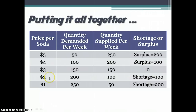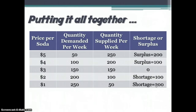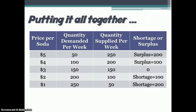If the price drops to $2, there's now a shortage — people want 200 cans but suppliers only produce 100, so we'd have a shortage of 100 cans. Equilibrium is that point at which the quantity demanded is equal to the quantity supplied — both demanders and producers have found a point where there is neither a surplus nor a shortage. In this example, the equilibrium price is $3 per can and the equilibrium quantity is 150 cans.